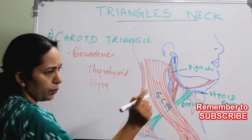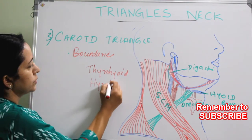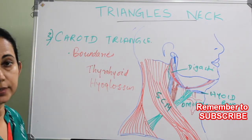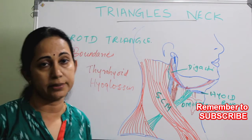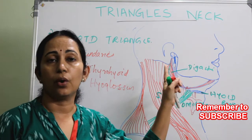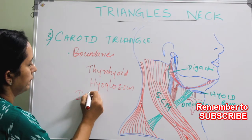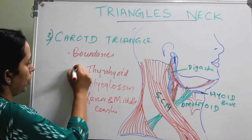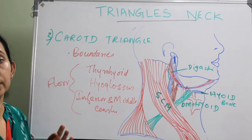The hyoid bone is an important landmark. The hyoglossus is part of the floor. There are also two constrictors — the inferior pharyngeal constrictor and the middle pharyngeal constrictor. You can remember that these also form the floor of the submandibular triangle. All these together form the floor.